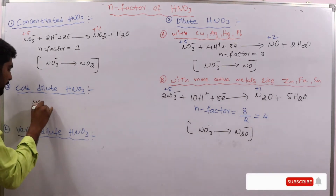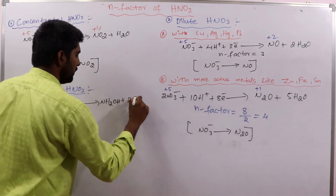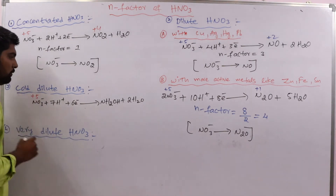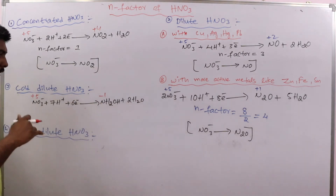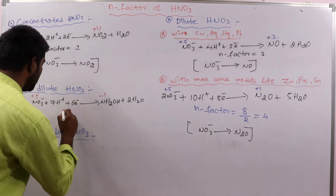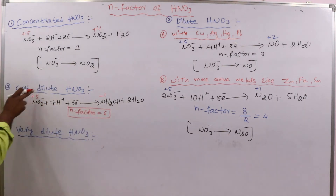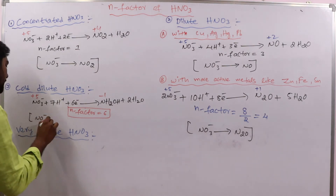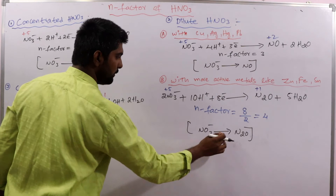Now for cold and dilute HNO3, the half-reaction is: NO3⁻ + 7H⁺ + 6e⁻ → NH2OH + 2H2O. The oxidation state of nitrogen changes from +5 to -1, a change of 6 units, so N-factor equals 6. The overall conversion is NO3⁻ to NH2OH (hydroxylamine).